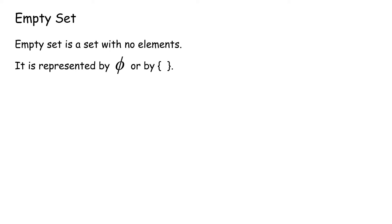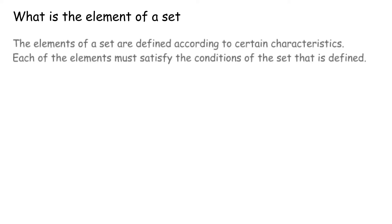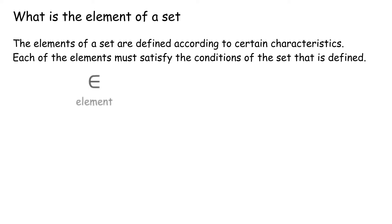Empty Set. An empty set is a set with no elements. It is represented by the symbol ∅ or by empty curly brackets {}. The elements of a set are defined according to certain characteristics, and each element must satisfy the conditions of the set that is defined. The element symbol is ∈ while the non-element symbol is ∉.